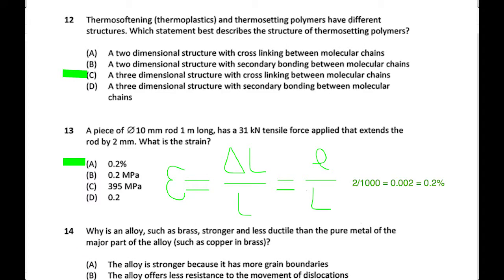Question on thermosetting versus thermosoftening polymers: why don't thermosetting polymers soften when heated? The answer is cross-linking via covalent bonds between the chains. The question asks whether cross-linking is in 2D or 3D. Cross-linked structures are 3D - graphite is a 2D structure but pretty much everything else is a 3D molecular structure.